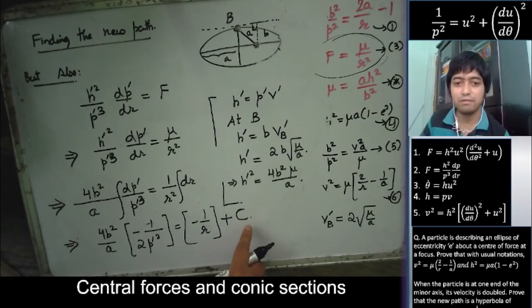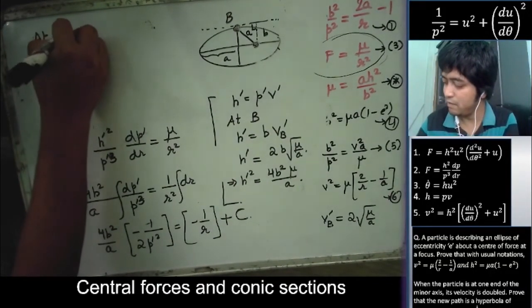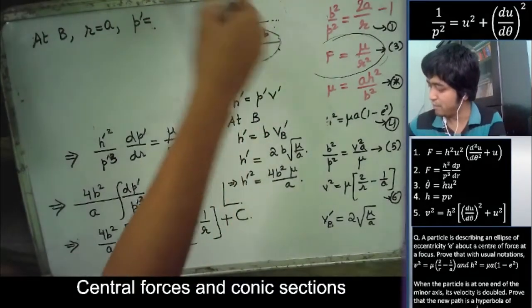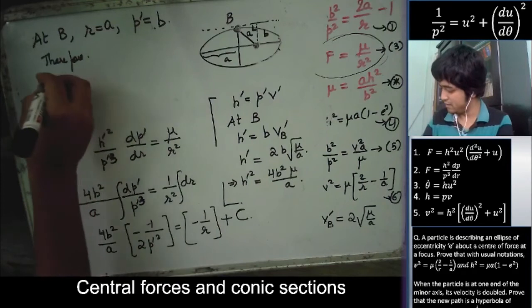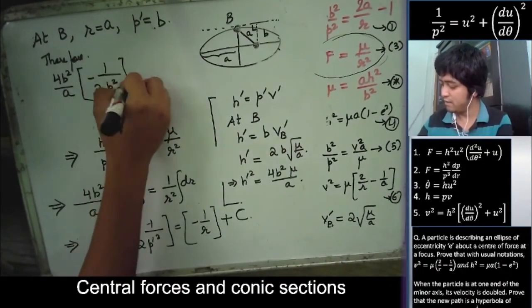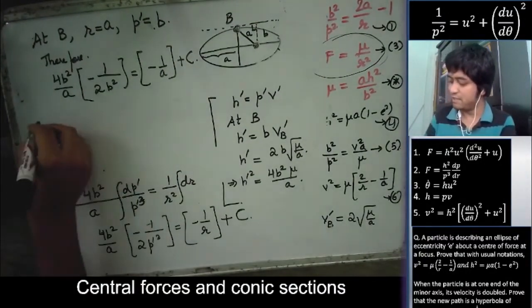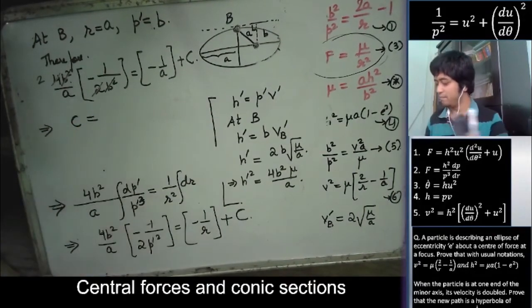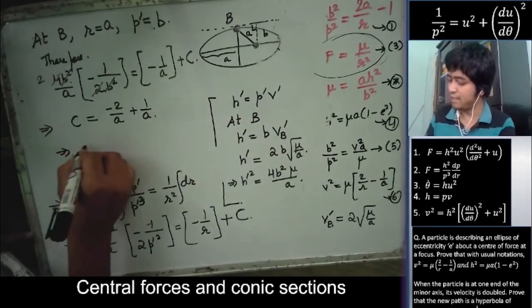To find the constant of integration C, we use conditions at B: r = a and p' = b. Substituting: −1/(2b²) = −1/a + C. We have h'² = 4b²μ/a substituted in, so on the left we get −a/(2·2b²·something). Working through: C = −2/a + 1/a = −1/a.